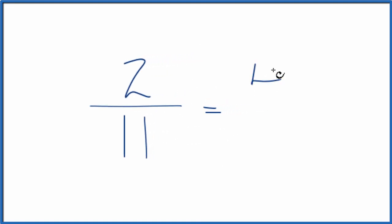2 times 2 is 4. 2 times 11, that's 22. And that's an equivalent fraction for 2 elevenths.